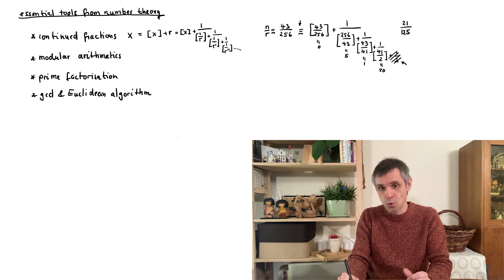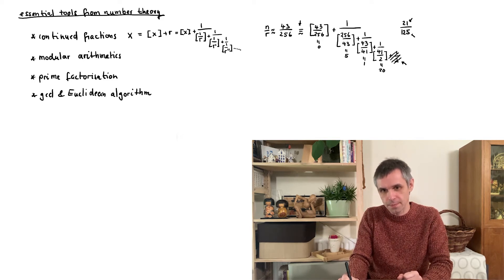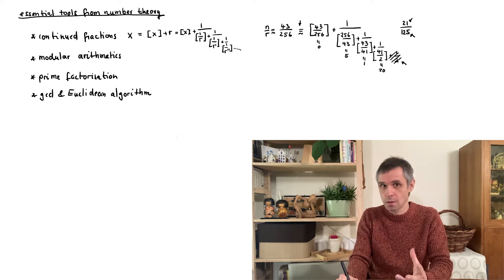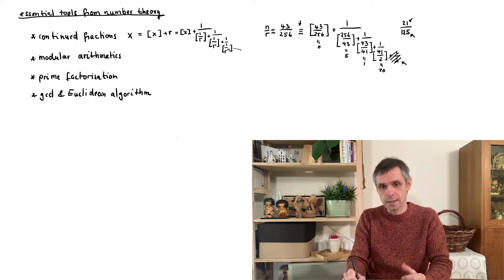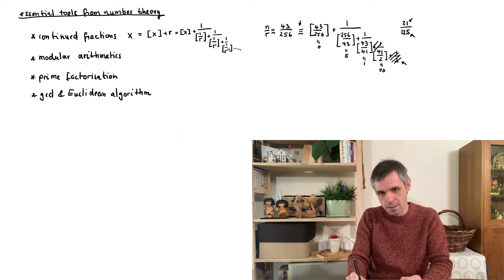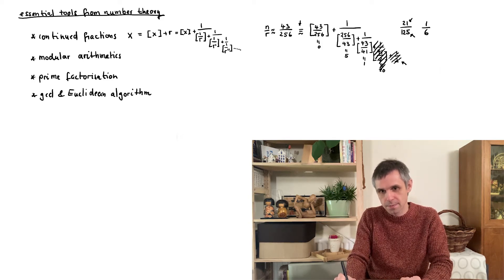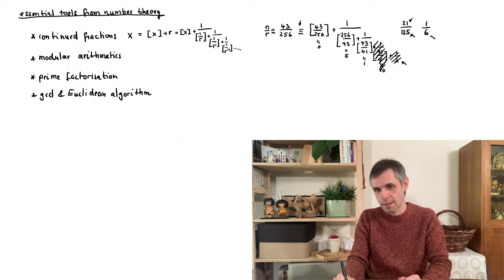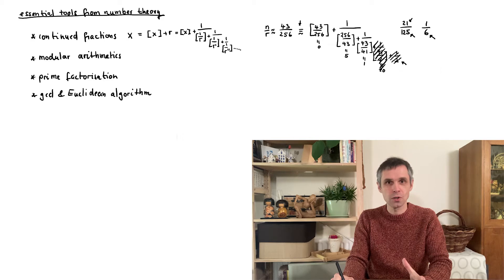This gives us two candidates for n and r, namely these two numbers. These could also be multiples of these numbers, because those multiples could cancel out. We can also obtain further candidates by stopping earlier — for instance, stopping at a certain point gives us 1/6, so six would be another candidate for the period. Then we return to our function and see which of these candidates works out.